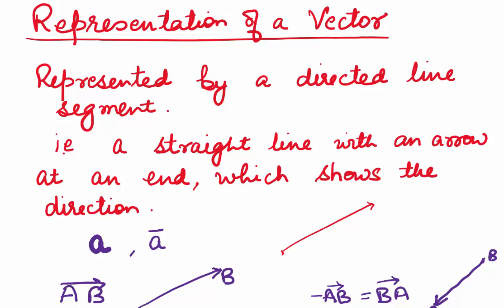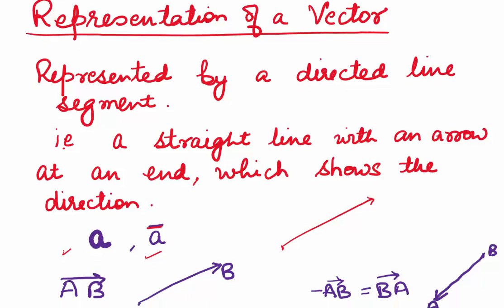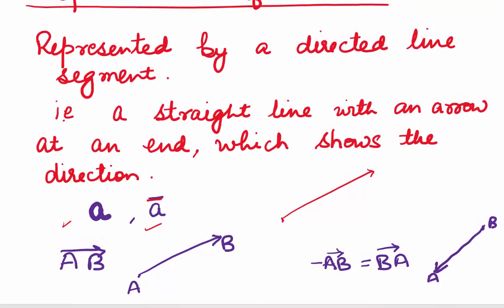So how do we write them? Either we use bold letters, or we'll write the vector — let's say my vector is denoted by a and we'll put a bar on the top of that. We sometimes represent them by the starting point and end point, like here we've represented it by AB and you can see the head of the arrow is ending at B. What happens when we have minus AB? Then that is nothing but BA — the tail is at B and the head is at A, so my vector is from B to A.